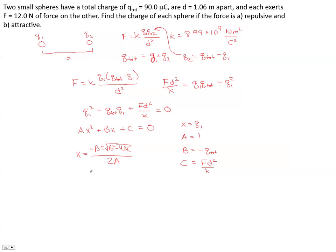One where the radical is added and another solution where everything under the radical is subtracted from negative b. In this case, it's a really neat thing that happens. The two roots end up being your values of q1 and q2, and you can confirm that when you get the two roots, you can add them together and they should add up to q total.